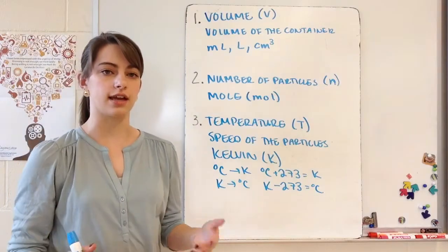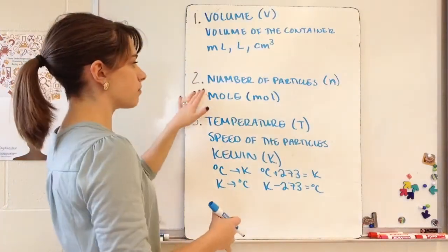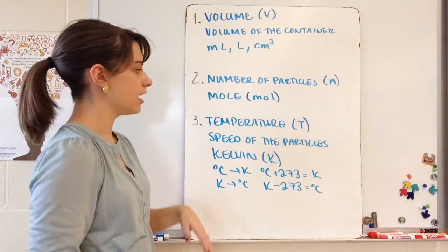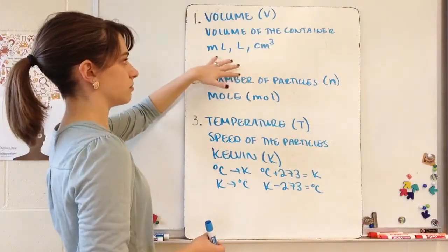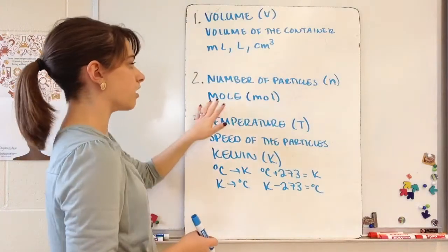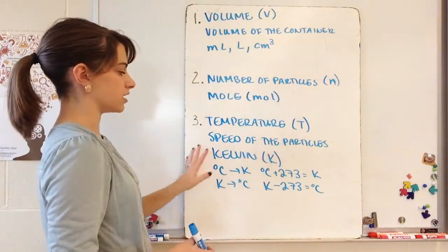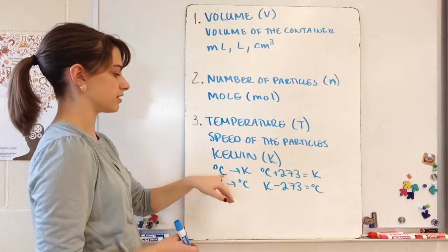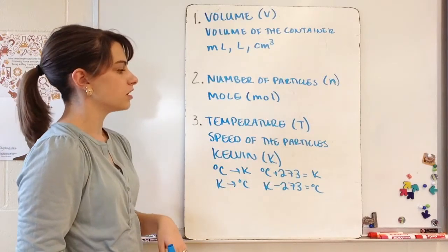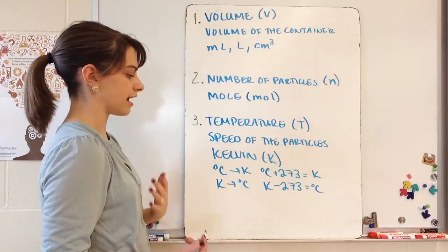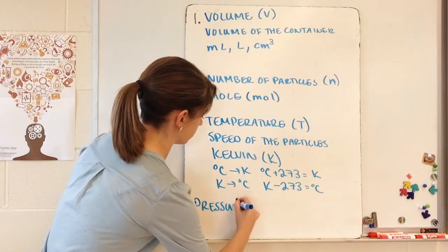So we have three main factors that can influence pressure: volume (V) — the amount of space particles have to move, measured in milliliters, liters, or cubic centimeters; number of particles (n) — measured in moles; and temperature (T) — which affects particle speed, measured in Kelvin. Remember to convert between Celsius and Kelvin by adding 273, and from Kelvin back to Celsius by subtracting 273.